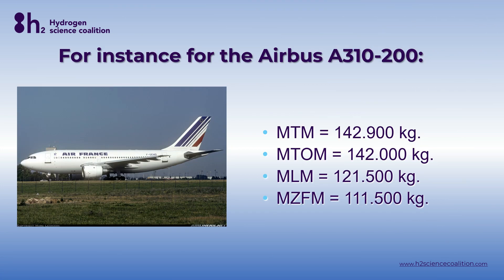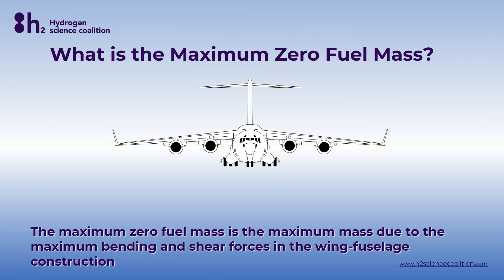Here is an example of the Airbus A310-200. The first three are all pretty straightforward, but the last one is not so clear and plays a big role in hydrogen powered aircraft. So what is this limitation? The maximum zero fuel mass is the maximum mass due to the maximum bending and shear forces in the wing-fuselage construction. Let me explain.